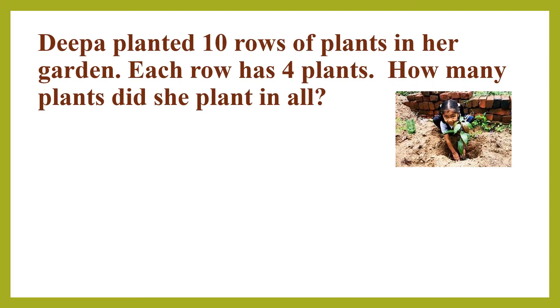This is Deepa. What is she doing? Deepa is planting something. Deepa planted 10 rows of plants in her garden. Each row has 4 plants. How many plants did she plant in all? How will you find this? You have to write the steps first.